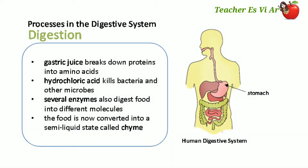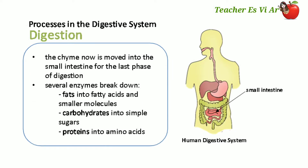The chyme is now moved into the small intestine for the last phase of digestion. Several enzymes break down fats into fatty acids and smaller molecules, carbohydrates into simple sugars, and proteins into amino acids.